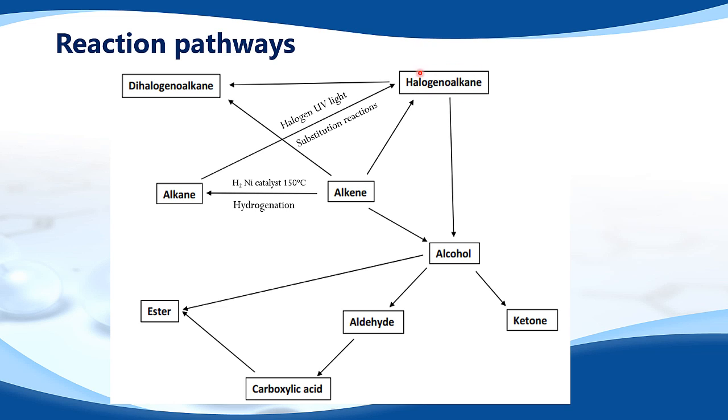From a halogenoalkane to a dihalogenoalkane, a dihalogenoalkane has two halogen atoms. The same conditions: react with a halogen in the presence of UV light.